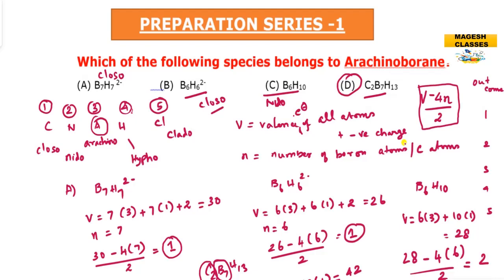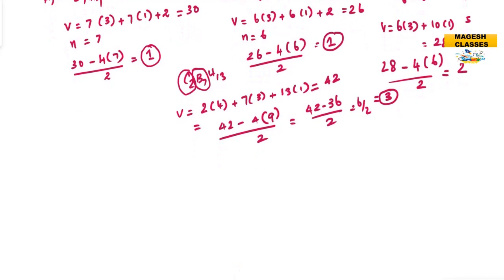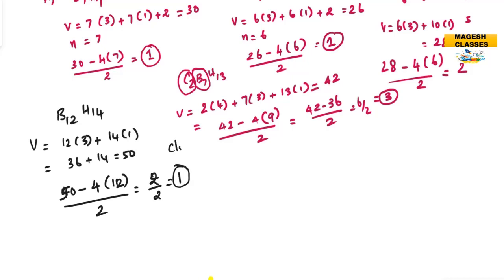We have to keep in mind this expression: valence electron minus 4 times number of vertices, divided by 2. This is the method to find out the type of boranes or carboranes.